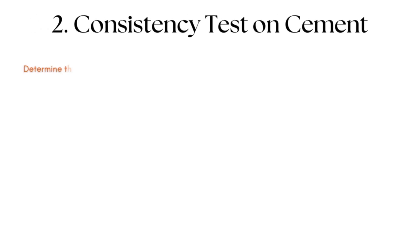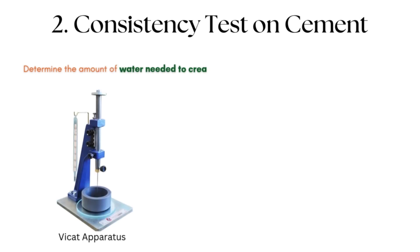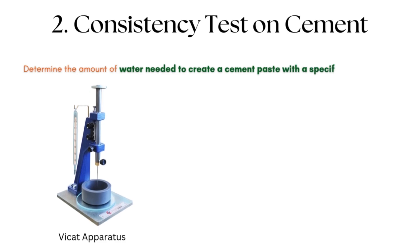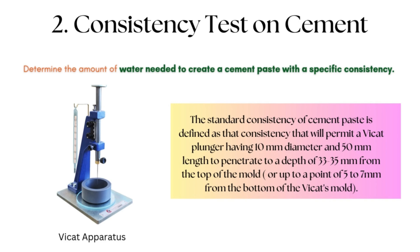Consistency Test on Cement: A consistency test of cement is conducted to determine the amount of water needed to create a cement paste with a specific consistency. The test apparatus used is the Vicat apparatus. Standard consistency is defined as that consistency which will permit a Vicat plunger of 10 mm diameter and 50 mm length to penetrate to a depth of 33 to 35 mm from the top of the mold, or 5 to 7 mm from the bottom of the Vicat mold.